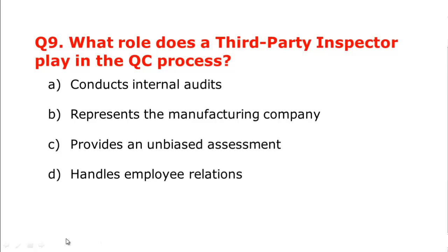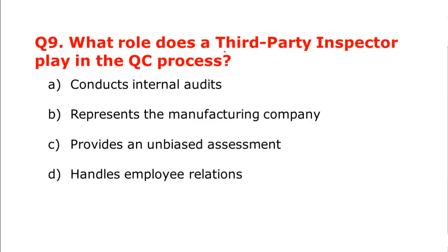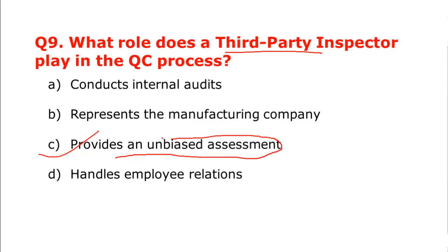Question number nine: what role does a TPI — third party inspector — play in the QC process? The most appropriate answer is option C: providing an unbiased assessment. Companies mostly hire TPI to give an impartial assessment of the job.